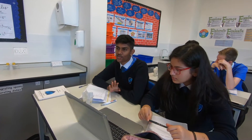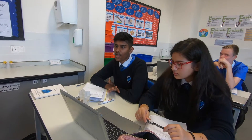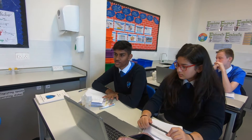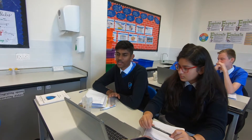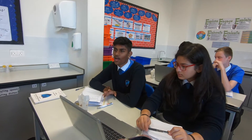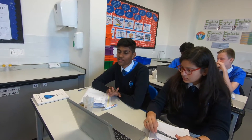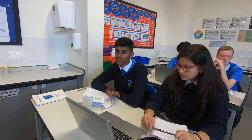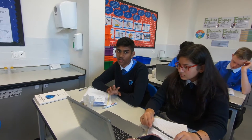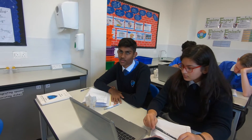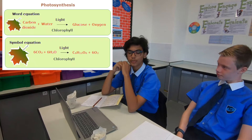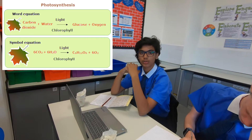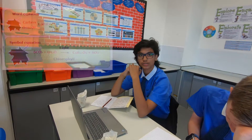During photosynthesis, the water splits, creating different hydrogen and oxygen atoms. Then the oxygen is released, and the hydrogen atoms combine with carbon dioxide, creating food for the plant. The chemical formula for glucose is C6H12O6.